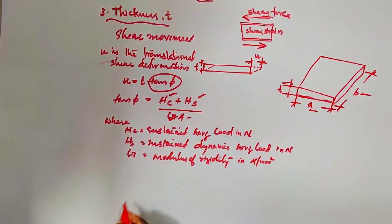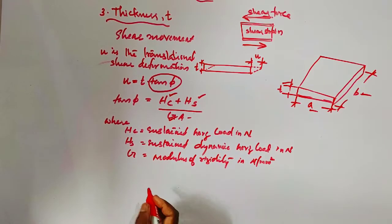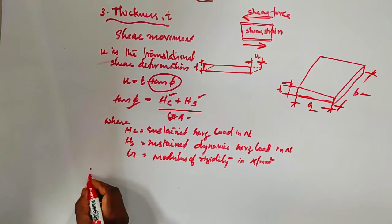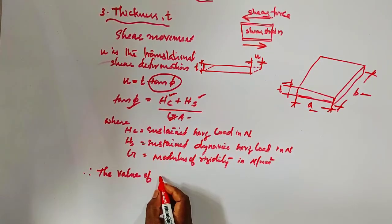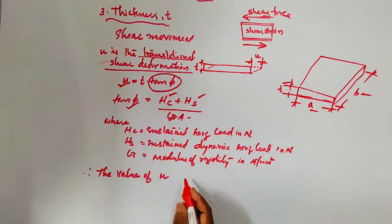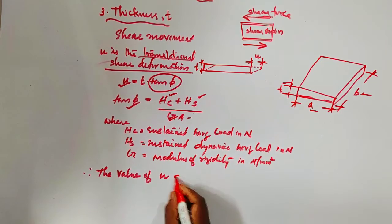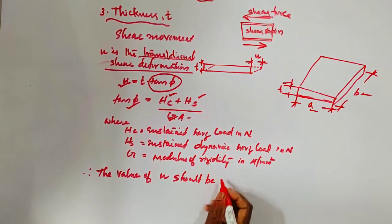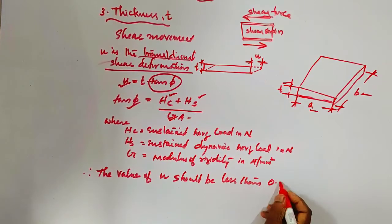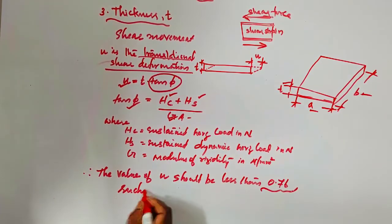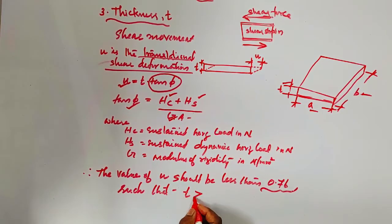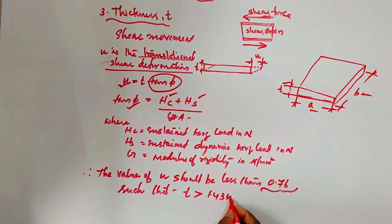A is the plan area. The value of U, the translational shear deformation, should be less than 0.7T. This gives the check: T greater than 1.43U.